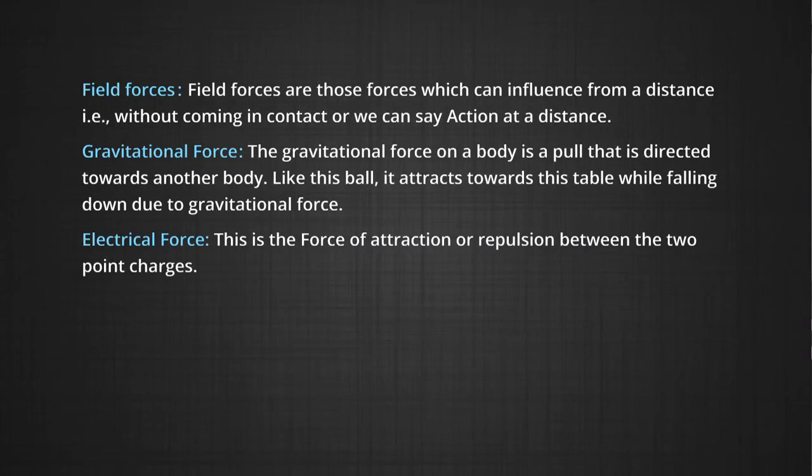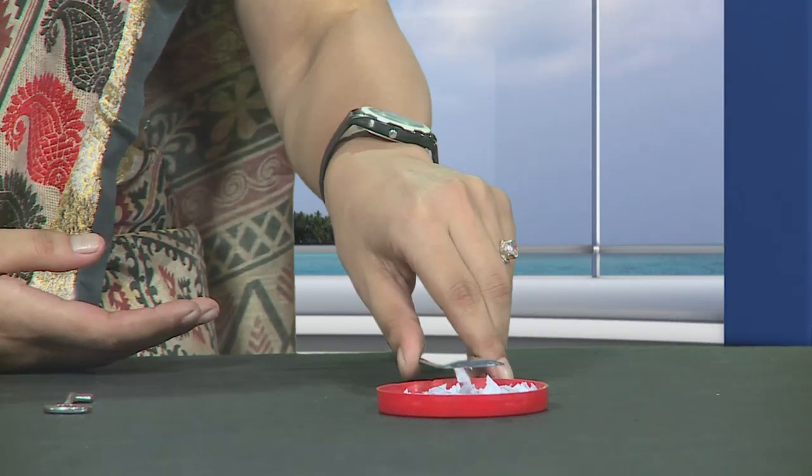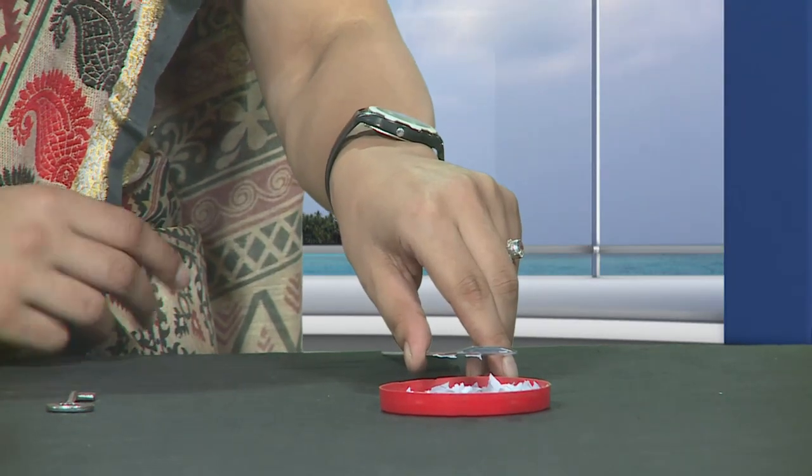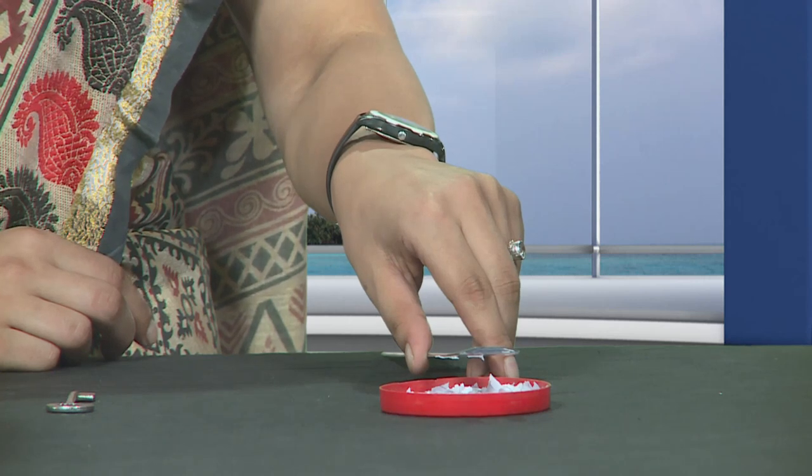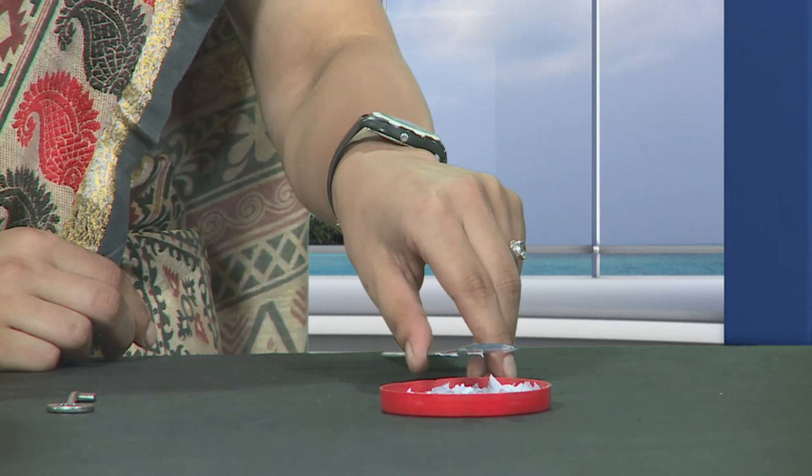Electrical force: this is the force of attraction or repulsion between two point charges. If you rub a scale with your hair, then the scale attracts the bits of paper placed on this table. This is due to electrical force.